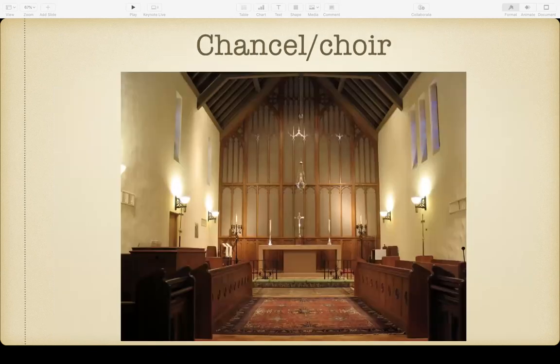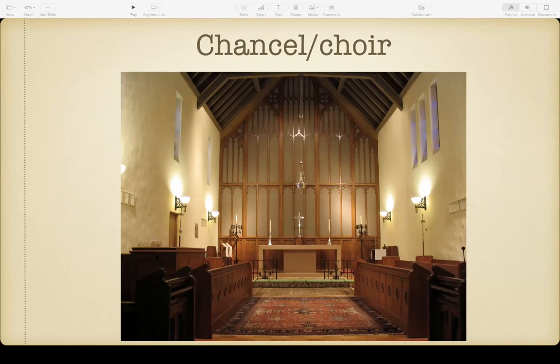The area up front where the choir sits is known as the chancel or the choir. In a traditional medieval church setting, you'd have a couple of steps up into the choir, and then a separate place where the altar is beyond that. At All Saints, because we're designed in an English Reformation style, the choir and what's called the sanctuary are all part of the same space, simply known as the chancel. The chancel is the forward part separated from the nave, usually on a raised level.